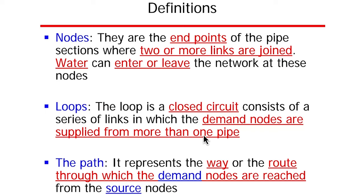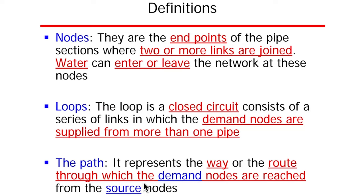Nodes are just the endpoints of pipe sections where two or more links are joined. Water can enter or leave the network at these nodes. Loops are a closed circuit — a loop consists of a series of links in which the demand nodes are supplied from more than one pipe. A path or water path represents the way or route through which the demand nodes are reached from the source nodes — the routes through which demands are supplied from the network.